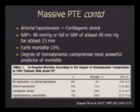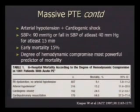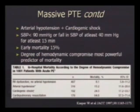Massive PE carries early mortality as high as 15%. The degree of hemodynamic compromise is the most powerful predictor of mortality. Per the JACC 1997 study: cardiogenic shock carries 24.5% mortality; if CPR was required, mortality approaches 65%; RV dysfunction without arterial hypotension gives 8.1% mortality; arterial hypotension alone around 15%. So, the more severe the hemodynamic compromise, the higher the mortality in massive pulmonary thromboembolism.